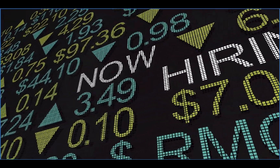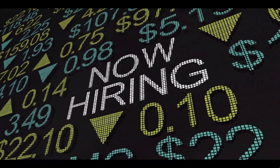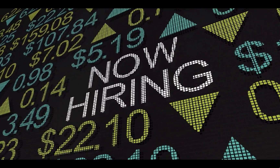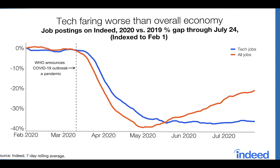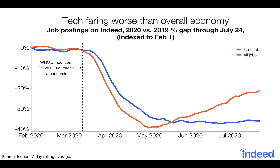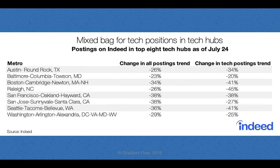U.S. tech job postings since mid-May 2020 have trended below overall job postings, according to Indeed Hiring Lab. On July 24, tech job postings were at 36% below their 2019 level — that's 15% lower than overall U.S. job postings for the same period. In eight top U.S. tech hubs, overall job posting declines were higher than the 21% decline in overall postings nationally.